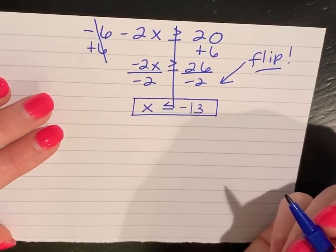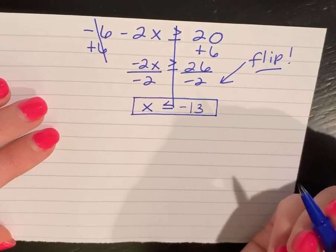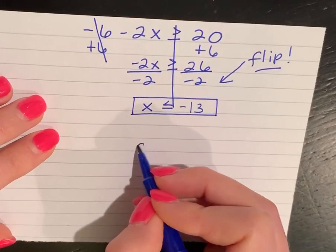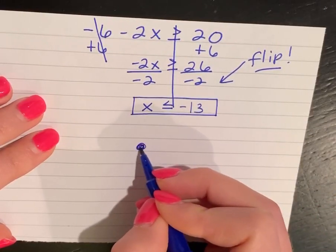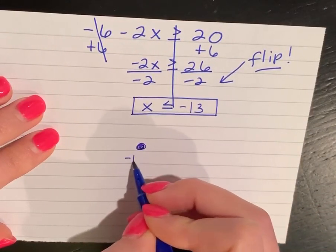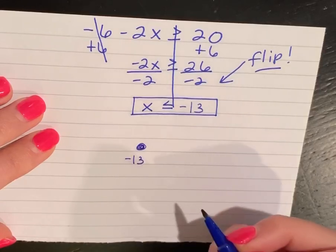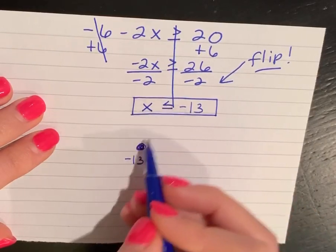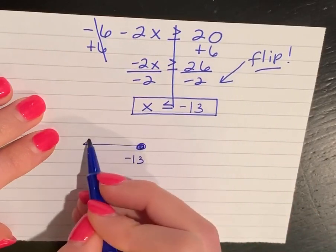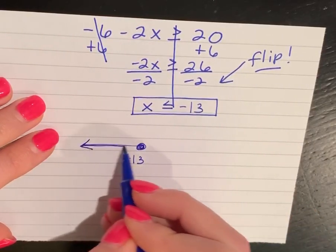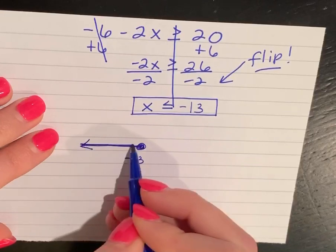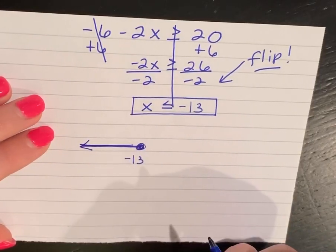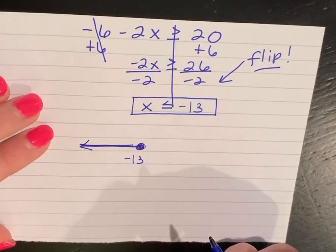When I put this on the number line, I'm going to have a closed circle at negative 13, and since x is less than or equal to, it's going to go to the left, because x is less than negative 13.